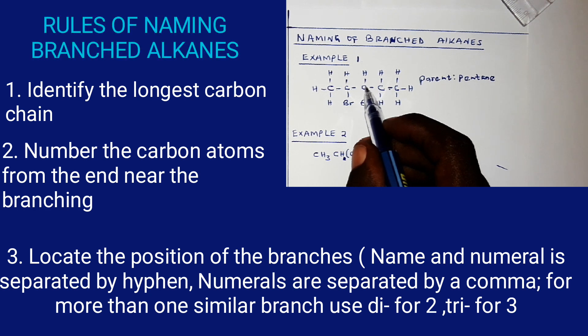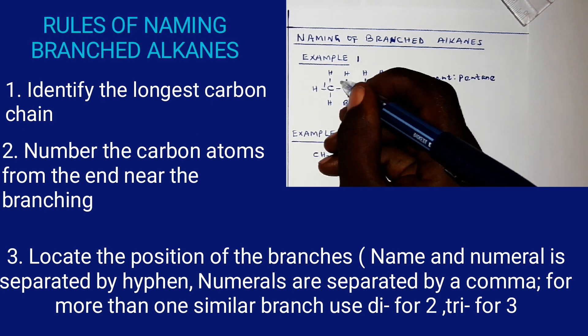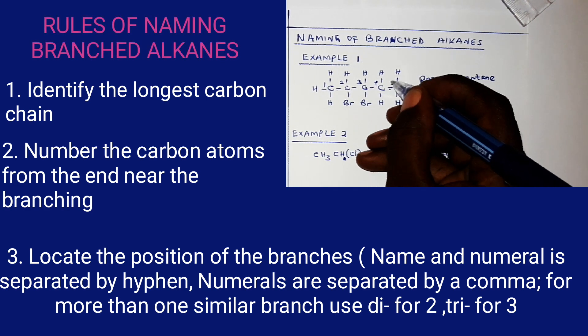If I begin on the right hand side, one, two, three. So it means my numbering will have to begin from the left hand side. One, two, three, four, five.